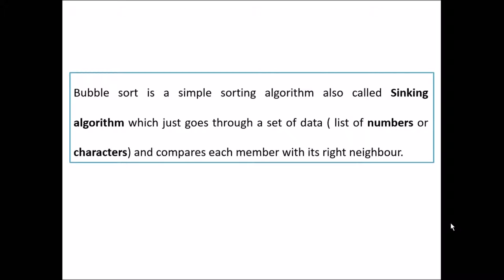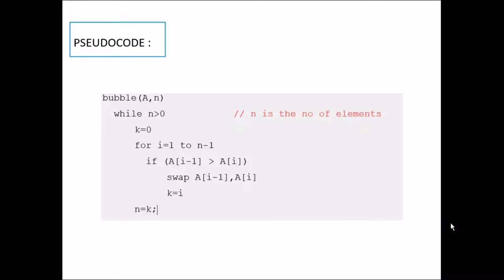Bubble sort is a simple sorting algorithm which goes through a set of data. Data can be either numbers or characters and compares each member with its right neighbor. It is also called as sinking algorithm. So coming to the pseudocode, it is the pseudocode given in the standard textbook that is Cormen.